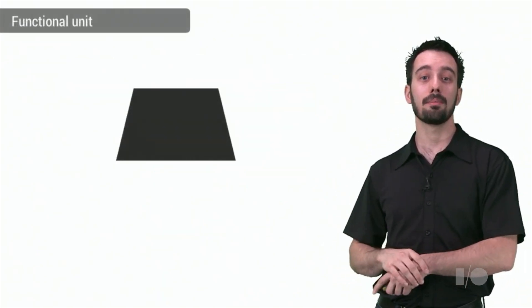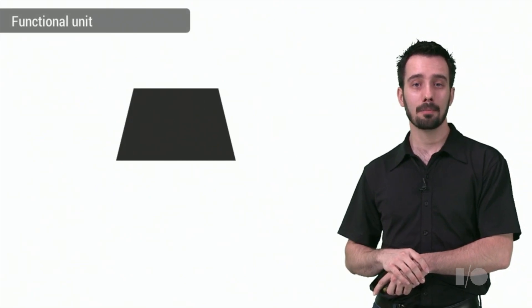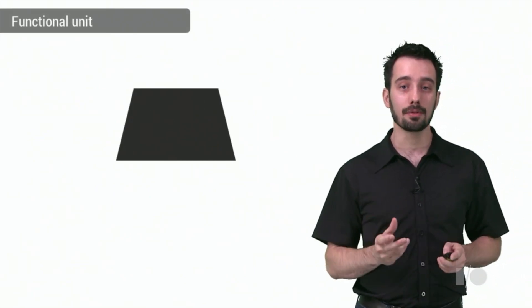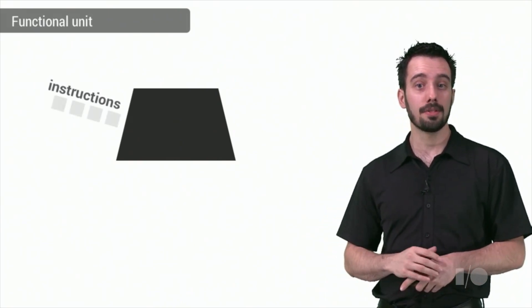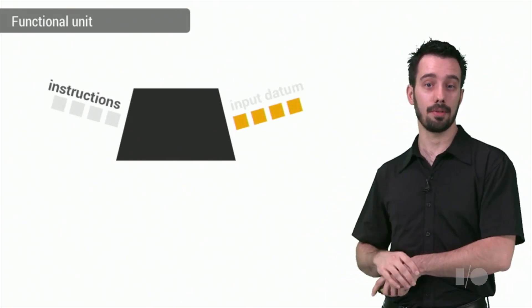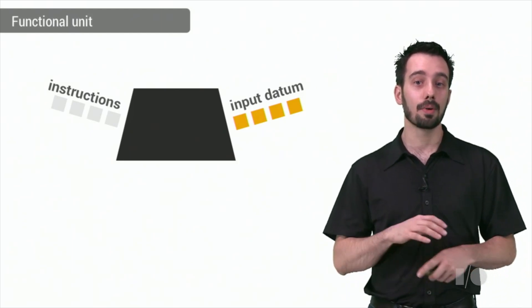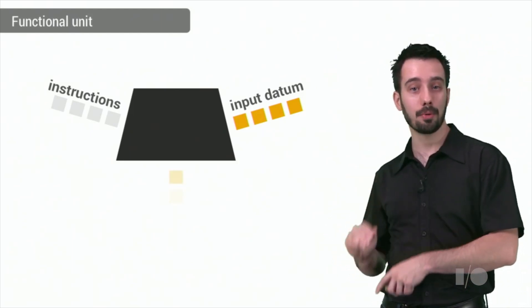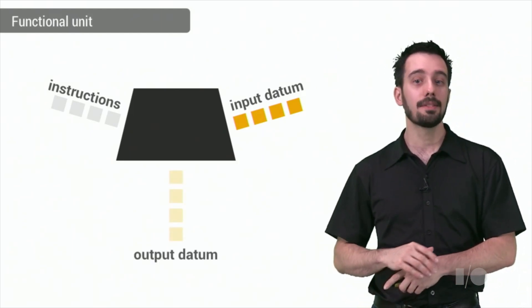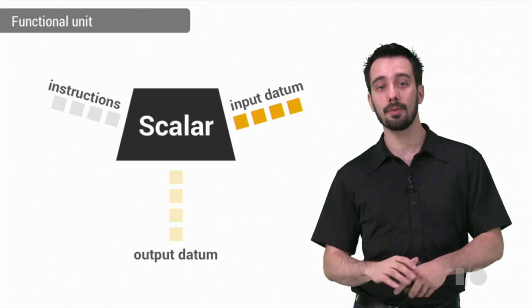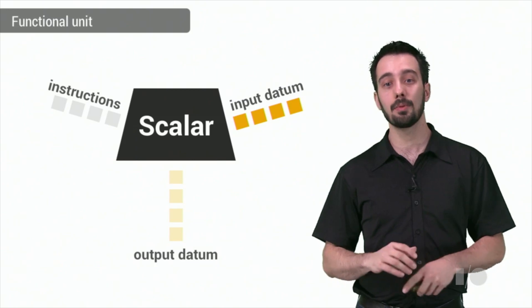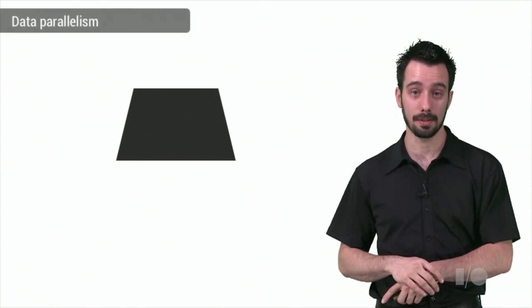Let's zoom into one of the previously mentioned functional units. Programming languages typically expose scalar instructions, shown here as a stream of four instructions. The CPU loads one input datum per instruction, and then executes one instruction to generate one output datum per instruction. This is a scalar way to do computation, which gets the job done, but it doesn't fully use a CPU's capabilities. CPUs have more than just load, store, and scalar functional units.